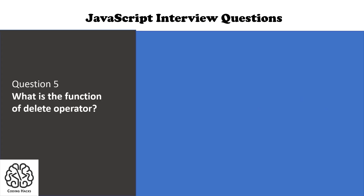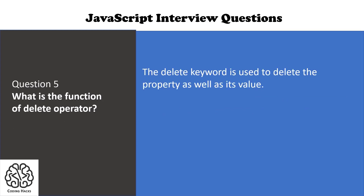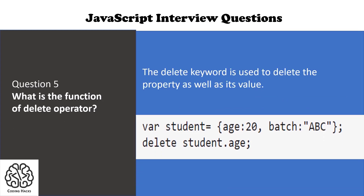The next question is: what is the function of the delete operator? Delete is used to delete the property as well as the value. For example, we have an object named student with two properties: age and batch. If you write delete student.age, this will delete the age property and its value of 20 from the object student.